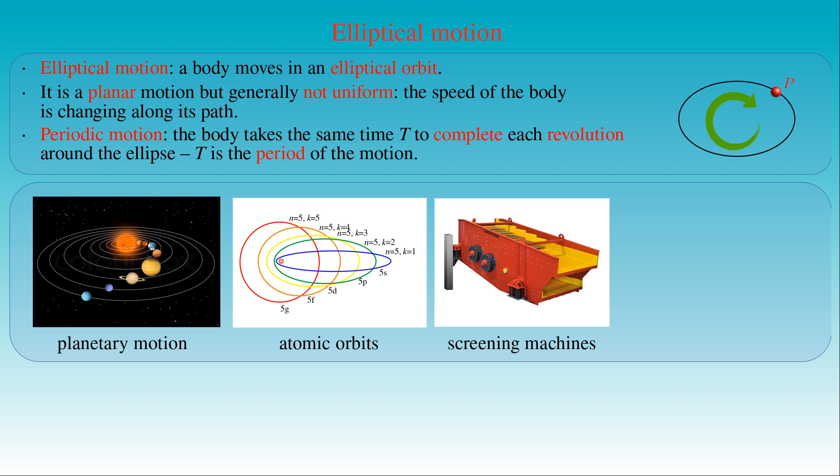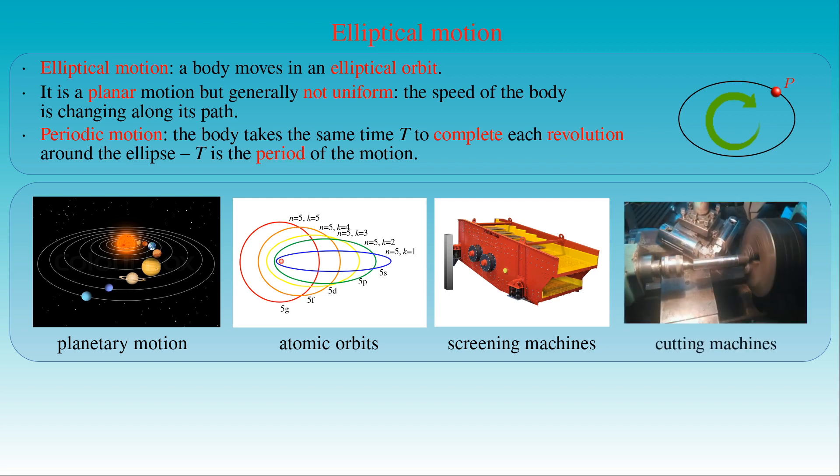Another industrial application of elliptic motion is the elliptic vibration cutting method, where the workpiece is fed against the vibrating tool along the nominal cutting direction. Some piezoelectric transducers are arranged in a metal block to drive the tool tip to vibrate elliptically.